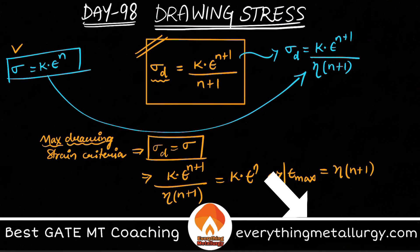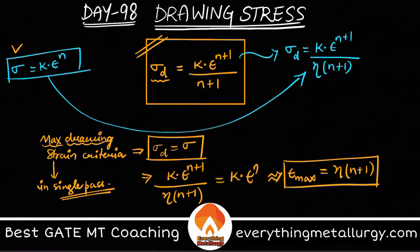And what will this be equal to? This will be equal to everything gets cancelled out, only eta into n plus 1 will be left out. Therefore, the maximum drawing strain, again this is in a single pass, in a single pass, what is the maximum drawing strain? It is equal to eta into n plus 1.